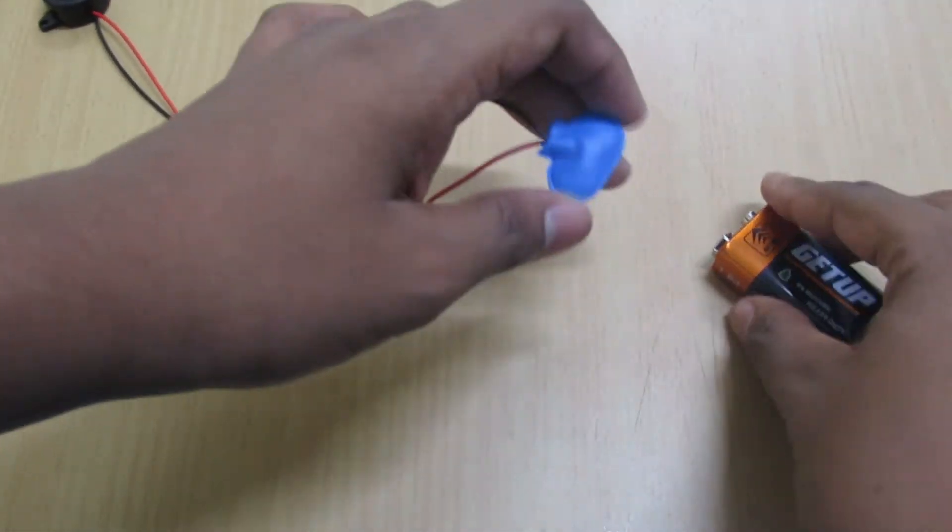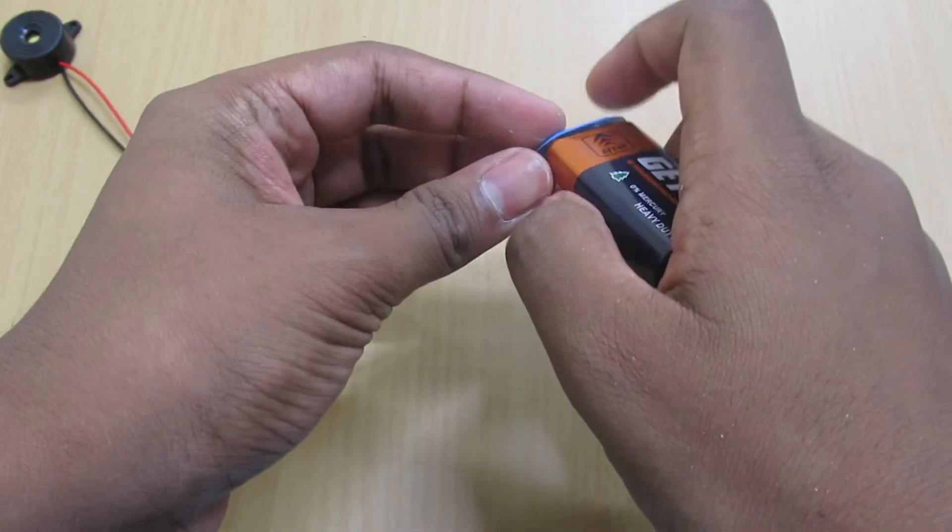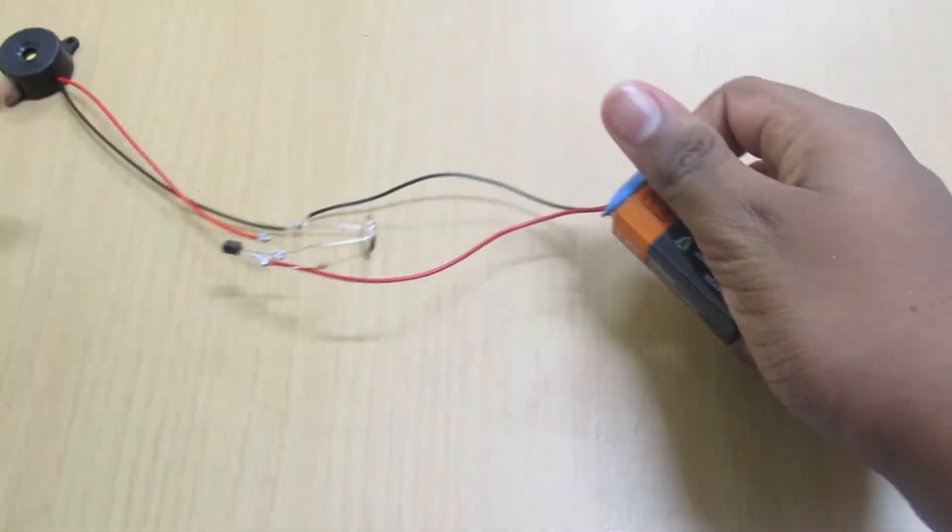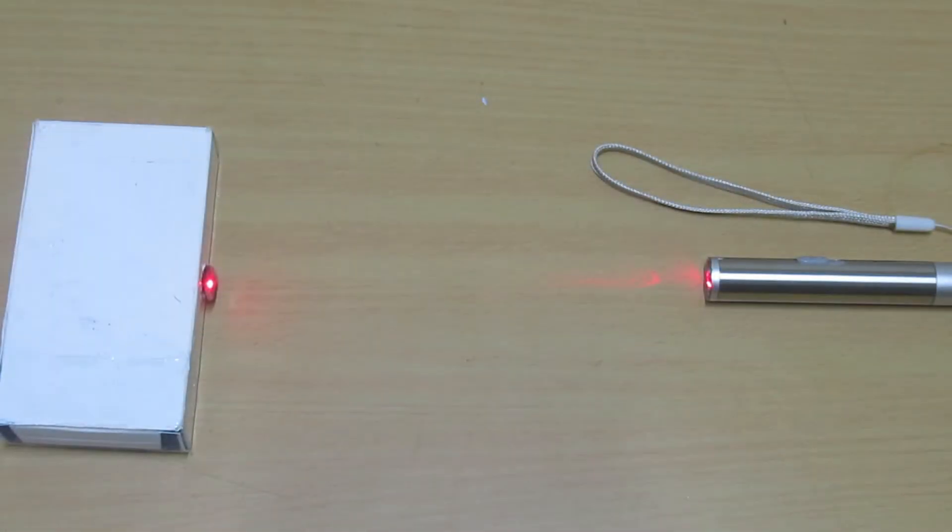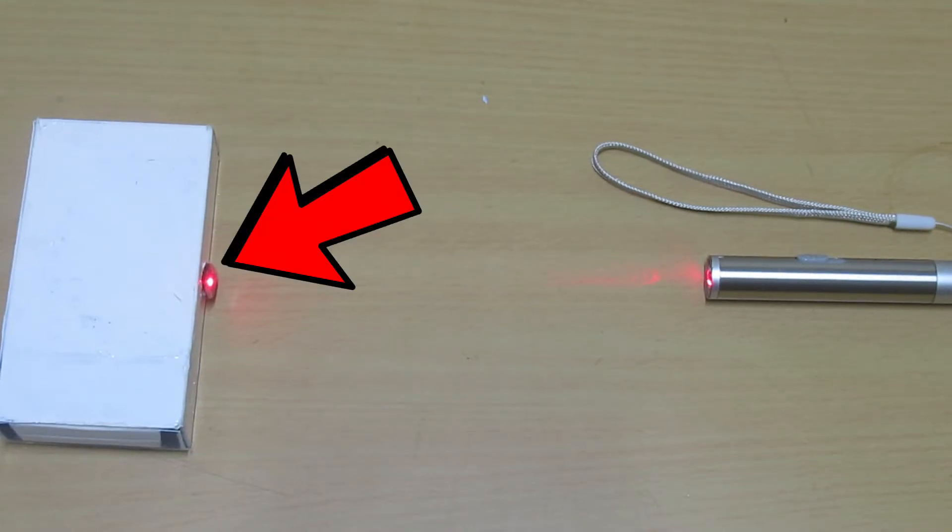Now take your 9-volt battery. As soon as we connect it, it will start beeping. So this is the setup. Now I have aligned the laser to the LDR.